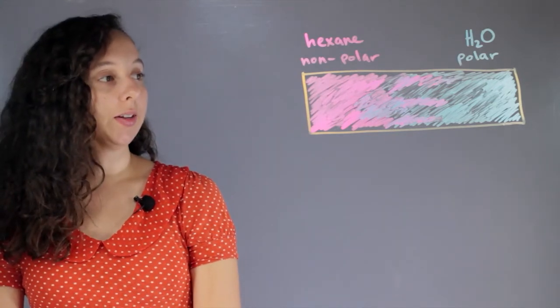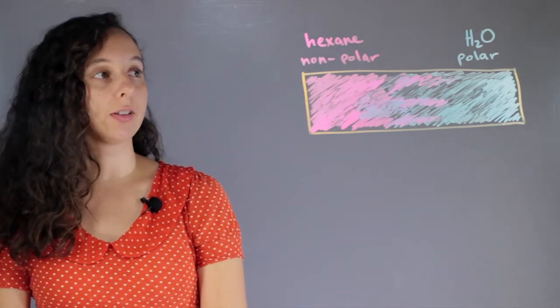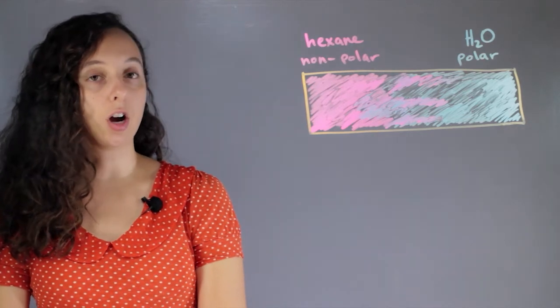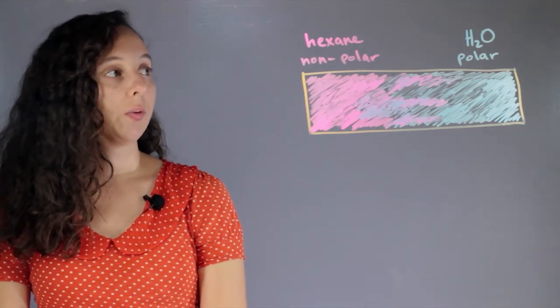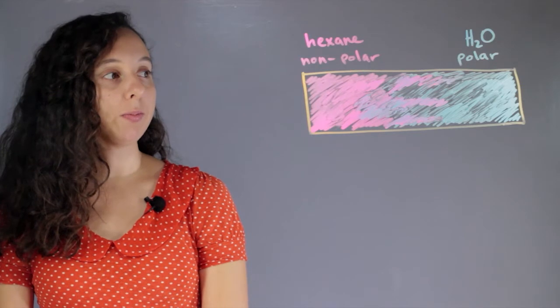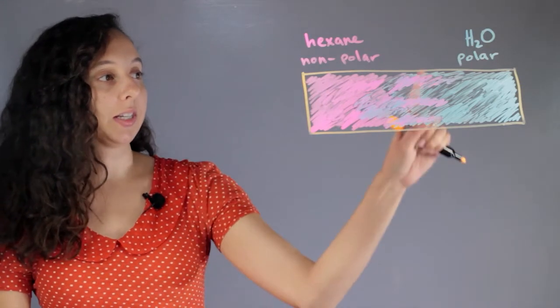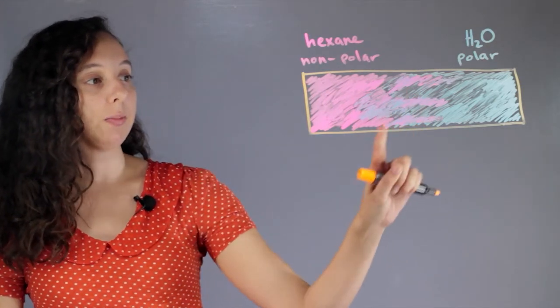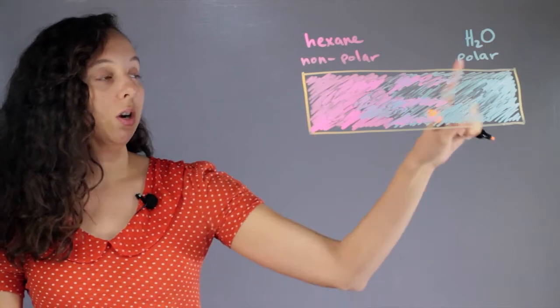In this case we have two different liquids. Hexane, which is very nonpolar, and water, which is very polar. And when you put them together, they'll have some mixing in the middle, but they mostly keep to themselves. Hexane over here, water over here.